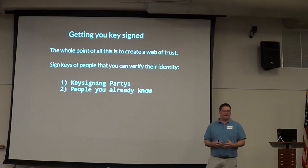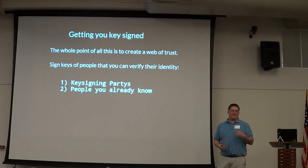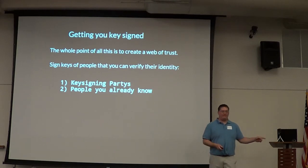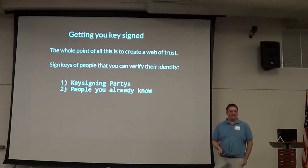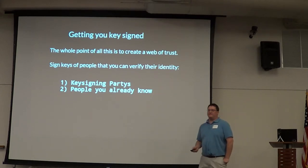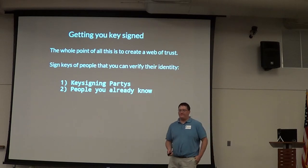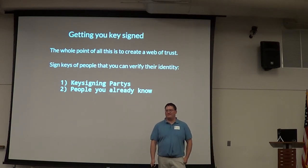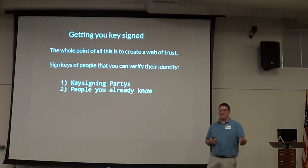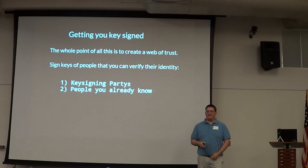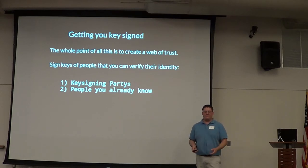And it's not transitive by default. If Jim signed my key, it doesn't mean that he trusts Matt Enders — it just means that both Jim and Matt trust me. There are also levels of trust: ultimate trust means you absolutely know it is that person. If you know somebody personally, you can say ultimate trust. If it was through a key signing party and a driver's license, you assign a low level of trust.